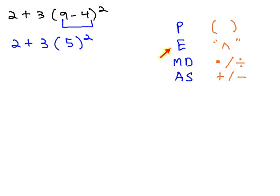After the parentheses are completely simplified, we need to focus on our exponents, and so we will just square the 5, keeping everything else the same.